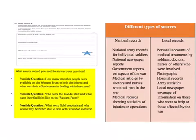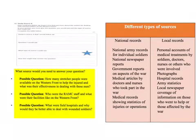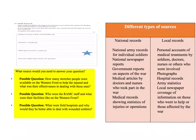Here's where your revision of the different types of sources is going to come in handy. For each of the possible questions you could have asked, there are records, local and national, that could help you answer them. For how many stretcher people were available on the Western Front, you could look at national army records. For their effectiveness, you could look at personal accounts of a stretcher bearer. For the question about the RMAC staff, you could look at medical articles by doctors and nurses who took part in the war. If you were looking at what were the field hospitals and whether they were better at dealing with wounded soldiers, you could look at medical records showing statistics of injuries or operations.